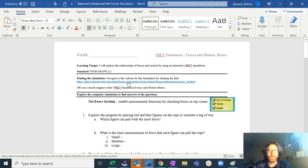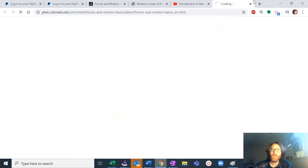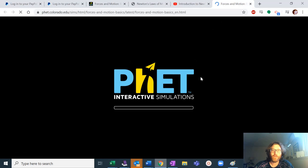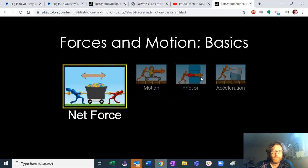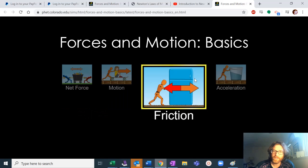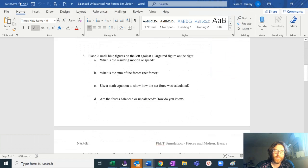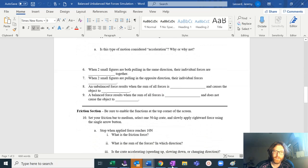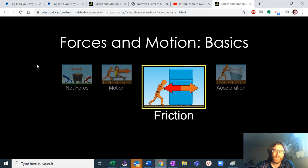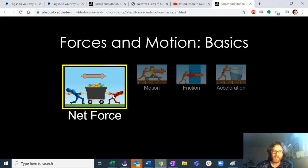You're going to click on the link that is in the document and it's going to bring you to that simulation. You're going to be using the net force simulation in the first part, and you're going to be using the friction section in the second part. So when you're switching over, that's what you're going to find. So we'll start with the net force section.